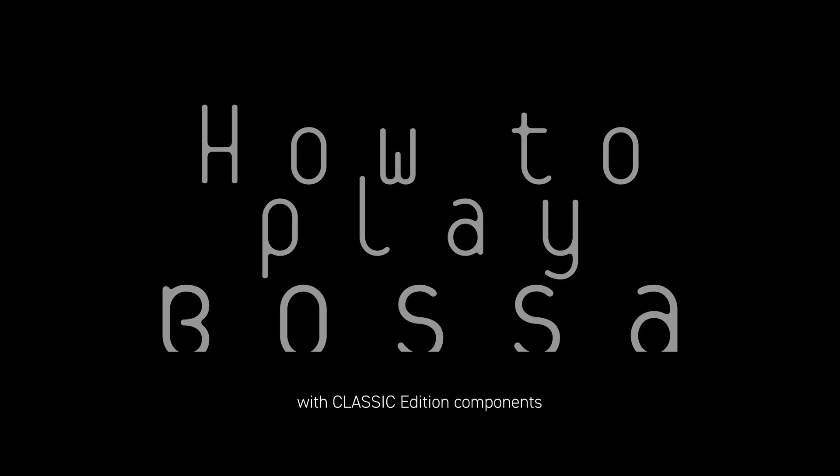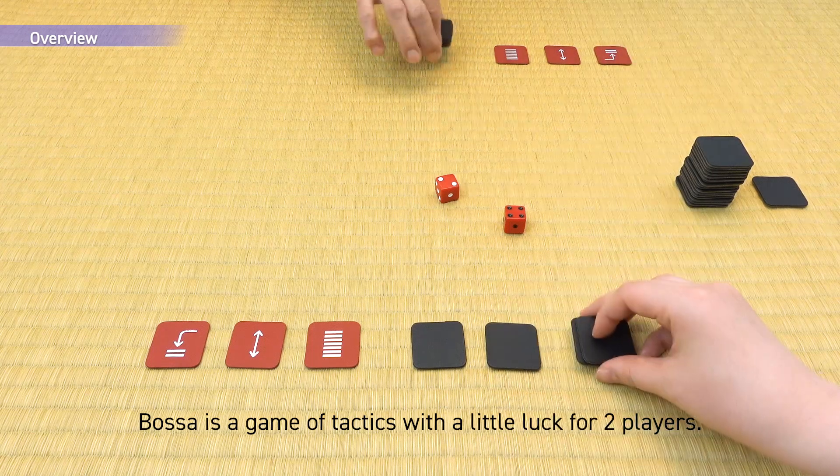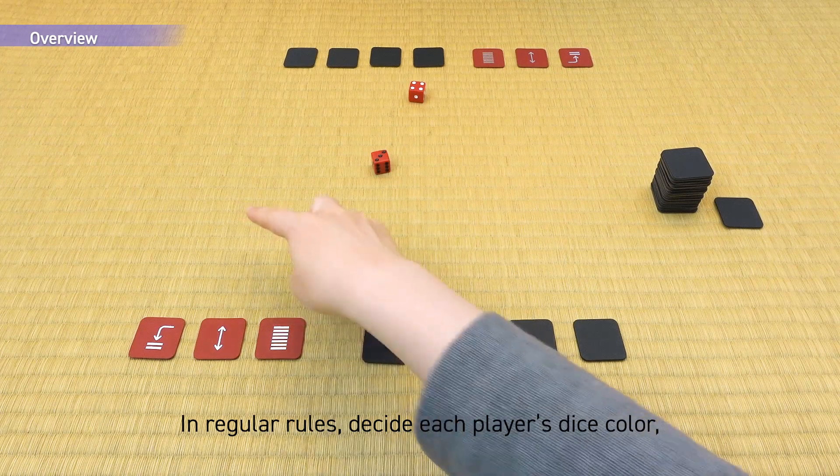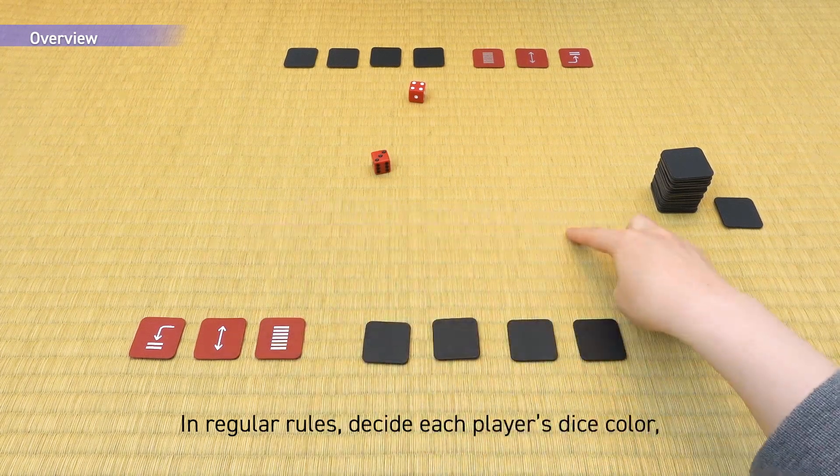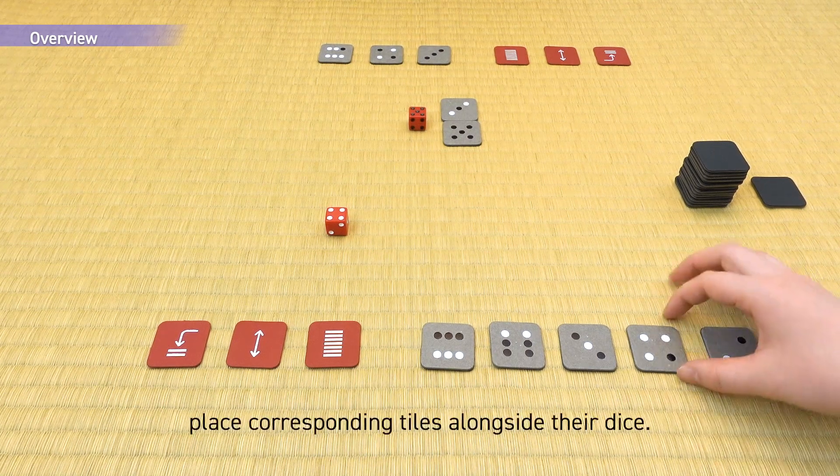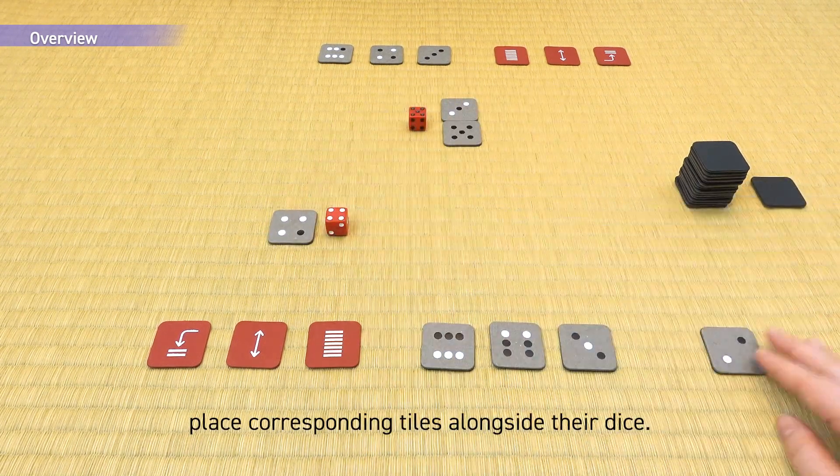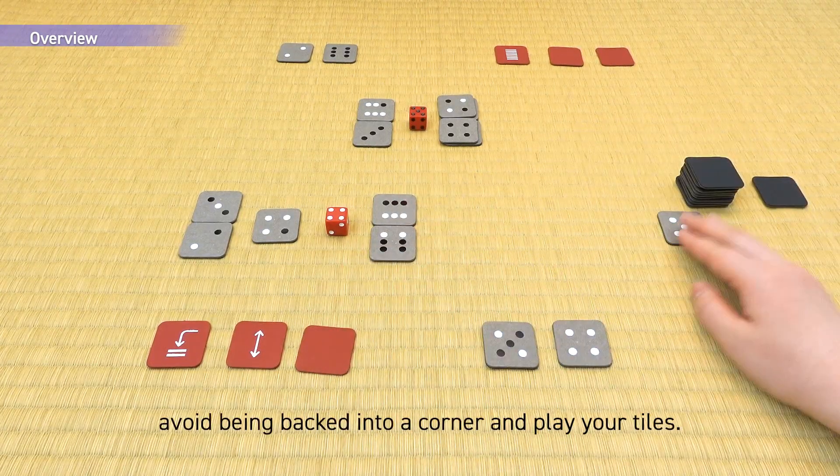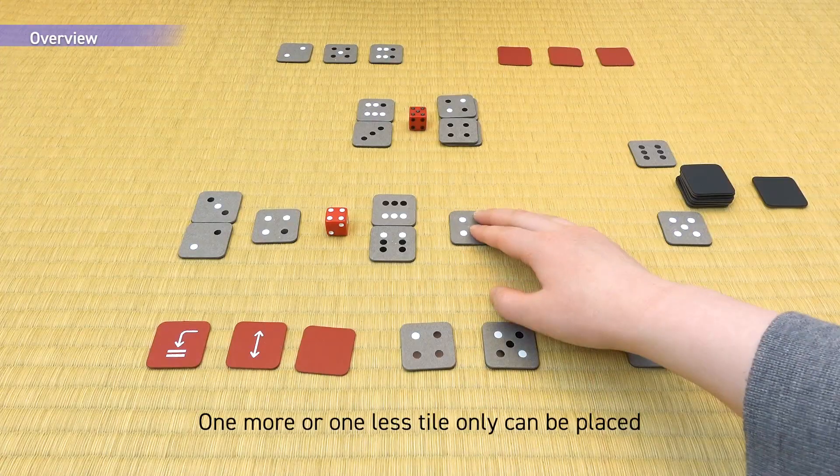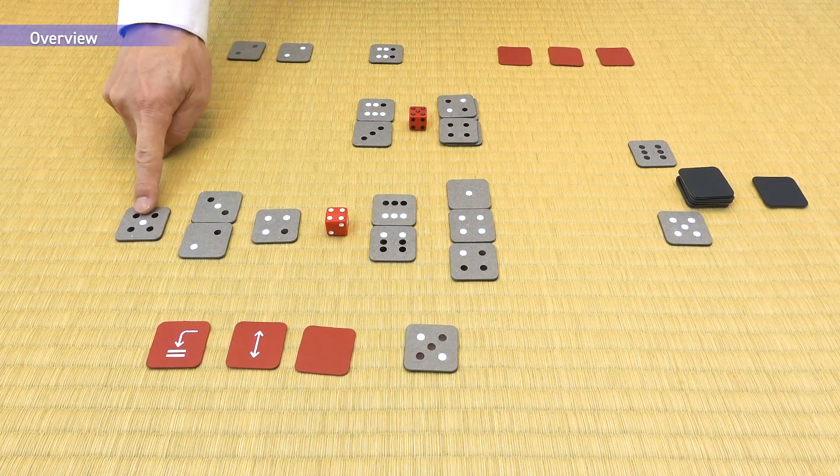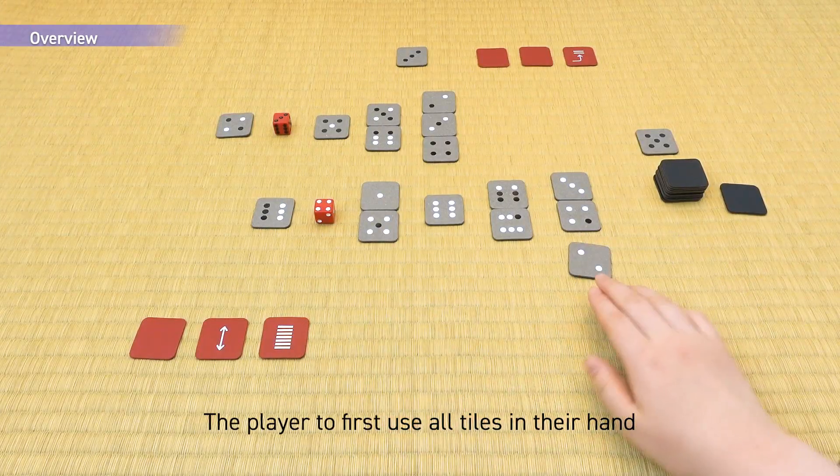How to play Bossa: Regular Rules. Bossa is a game of tactics with a little luck for two players. In regular rules, decide each player's dice color, then according to the dice pips color and number, place corresponding tiles alongside their dice. Utilizing three action cards, avoid being backed into a corner and play your tiles. One more or one less tile only can be placed alongside previously placed tiles. The player to first use all tiles in their hand or have six rows of tiles on their own color line takes the win.